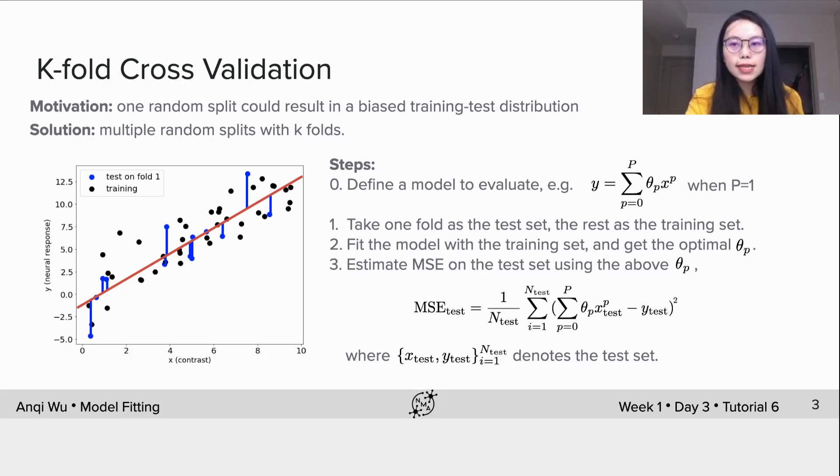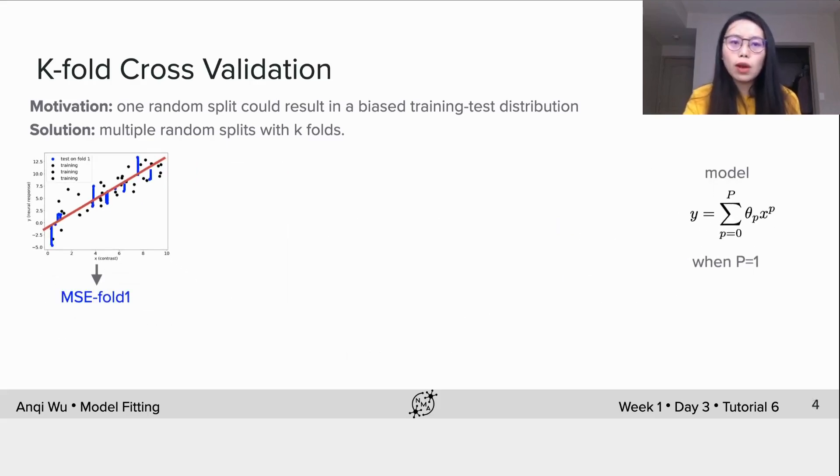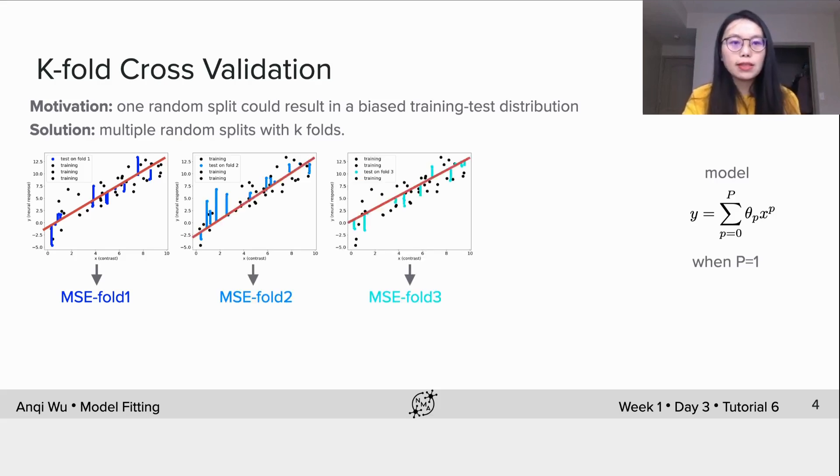Where x test and y test denotes the test set, n test is the number of data points in the test set. Now we complete one procedure to obtain the MSE for fold one. We could repeat the same steps to another split with fold two as the test set and repeat the same steps to all splits.